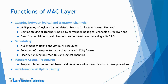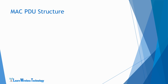MAC layer also supports maintenance of uplink timing. The UE needs to maintain timing synchronization with the cell at all times. The MAC layer performs required procedures for periodic synchronization. The timing advance instructions are periodically signaled by the E-NodeB to UE by means of MAC PDU signaling. Now let's have a look at the structure of MAC PDU and how the data is packed into the PDU by the MAC layer.